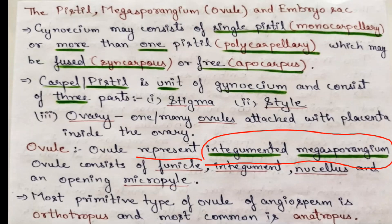In the ovule, there is a funicle, integuments, and nucellus. There is an opening called the micropyle. The diagram given in NCERT shows the anatropous ovule, and you must remember that the most common type of ovule is the anatropous ovule.